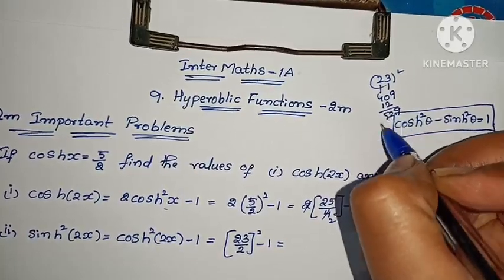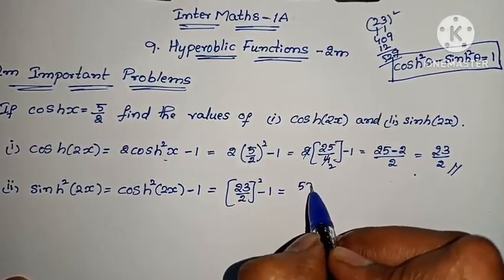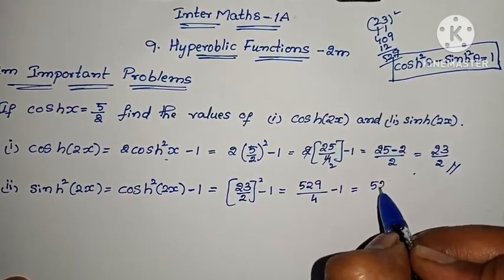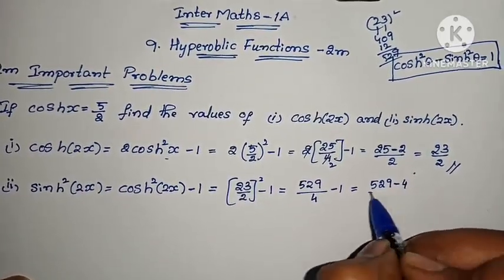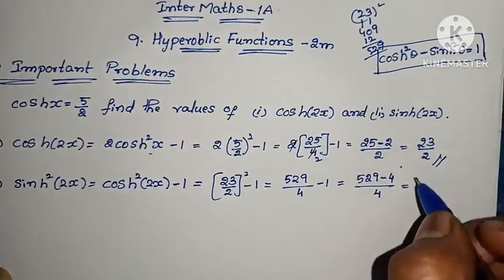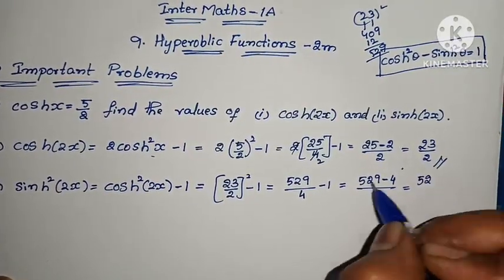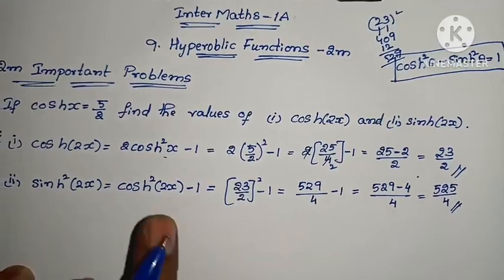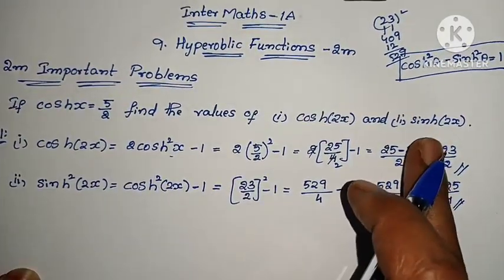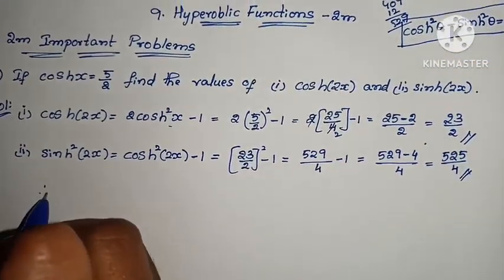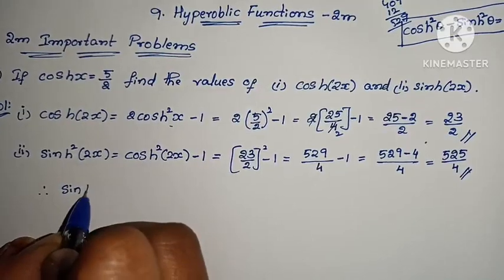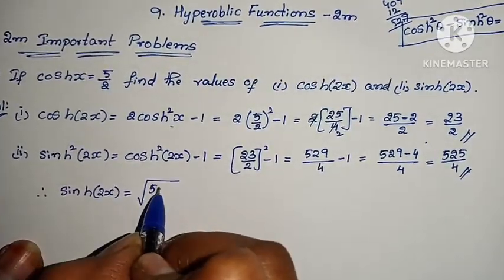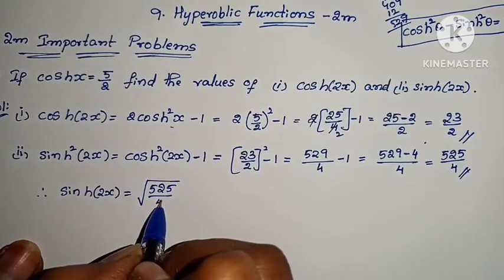So sinh²(2x) = 529/4 − 1 = (529 − 4)/4 = 525/4. Therefore sinh(2x) = √(525/4).